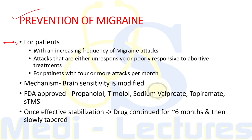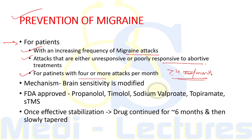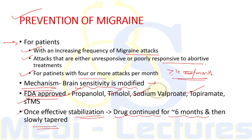Prevention is needed for patients with increasing frequency of migraine attacks, attacks unresponsive or poorly responsive to abortive treatments, and for patients with four or more attacks per month. By prevention, brain sensitivity is modified so the brain reacts less to stress. FDA-approved preventive treatments include propranolol, timolol, sodium valproate, topiramate, and single-pulse transcranial magnetic stimulation. Once effective stabilization is reached, the drug is continued for six months then slowly tapered.